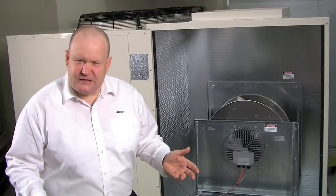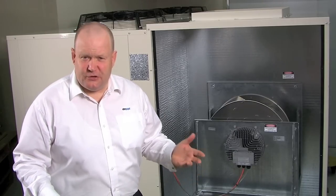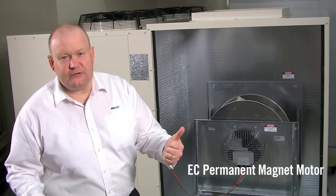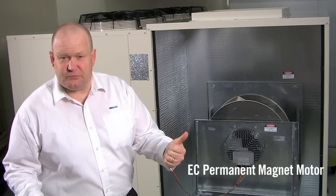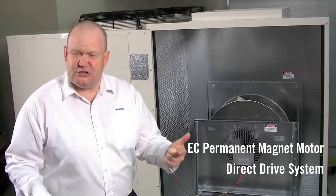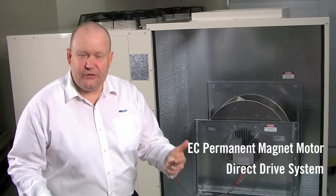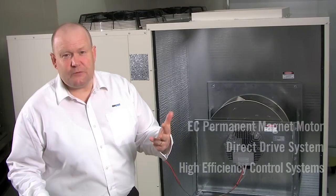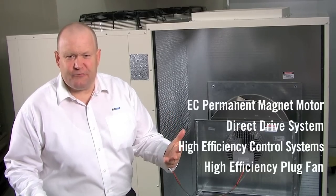So let's put all those energy efficiency improvements in the new technology together inside the air conditioning unit. First of all there's the EC motor, the permanent magnet motor which is more efficient. Secondly there's a direct drive system. Thirdly there's high efficiency control systems, and fourthly there's the high efficiency backward curve plug fan.